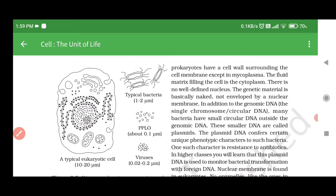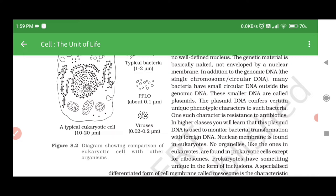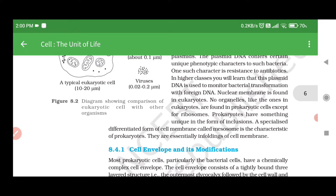All prokaryotes have a cell wall surrounding the cell membrane except in mycoplasma. The fluid matrix filling the cell is the cytoplasm. There is no well-defined nucleus. The genetic material is basically naked, not enveloped by a nuclear membrane. In addition to the genomic DNA (the single chromosome or circular DNA), many bacteria have small circular DNA outside the genomic DNA called plasmids. The plasmid DNA confers certain unique phenotypic characters to bacteria, such as resistance to antibiotics.